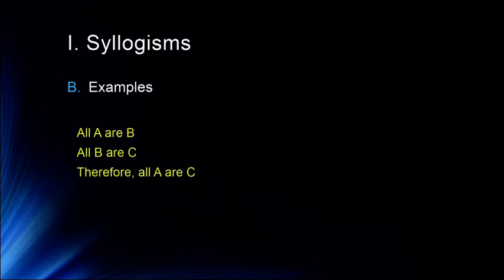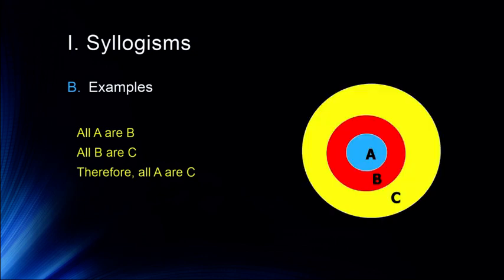This is generally how syllogisms are stated — we substitute words for categories. If all of category A are part of category B, and all of category B are part of category C, then it's logically valid to conclude that all of the A's are part of category C. We can use a Venn diagram to illustrate this: A is all included in B, B is all included in C, so therefore A is all included in C.